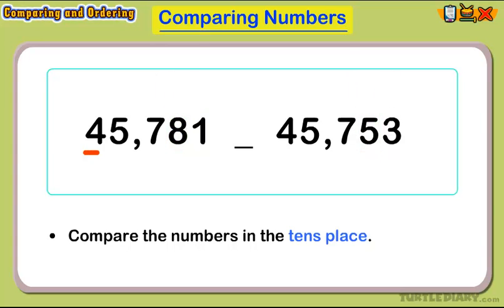So, 45,781 is the greatest number because 8 is greater than 5.